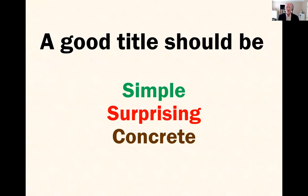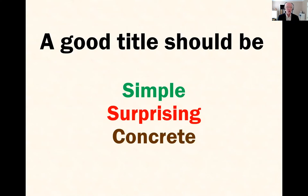Surprising: all research really should be surprising. Why are you doing research if you're not finding something new? Surprising means what's new about your research. Your title should convey to the audience what you have done that no one else has done before you, so they can look at your paper or abstract or poster and say, 'I'm interested in that because there's something new here.' You don't want them to have to read halfway through the paper to find out that something new was done.